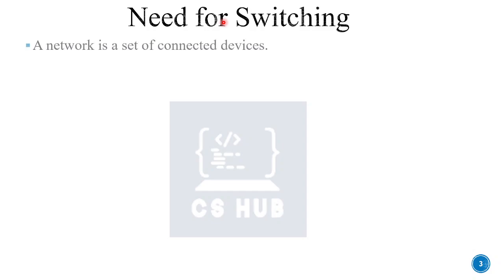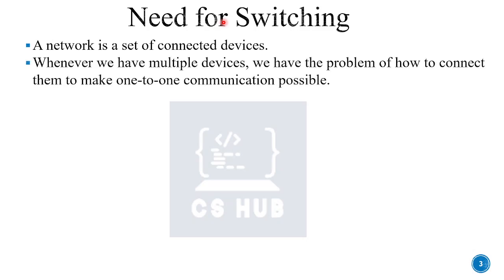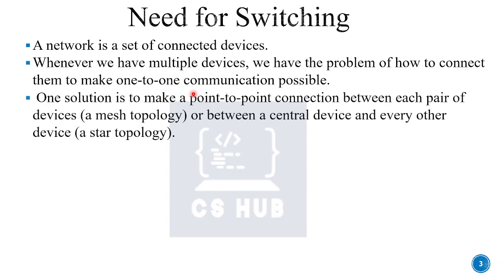We are going to start with the need for switching. A network is a set of connected devices — a collection of devices that are connected and communicating. Whenever we have multiple devices, we have the problem of how to connect them to make one-to-one communication possible. One approach is a point-to-point connection between each pair of devices, which is a mesh topology.